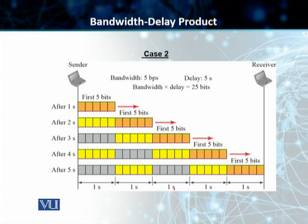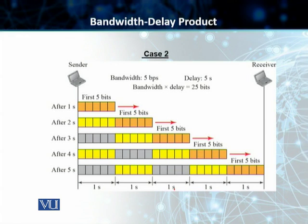The product of bandwidth and delay in these two cases is the number of bits that can fully fill the link. This is a very important concept when we need to send data in bursts. There is seldom a communication where we are sending individual bits; we are sending messages in multiple bursts. A burst of five bits goes to the receiver, and we wait for an acknowledgement of this burst from the receiving end before we can send the next burst. The bandwidth delay product defines the number of bits that can fully fill the link.